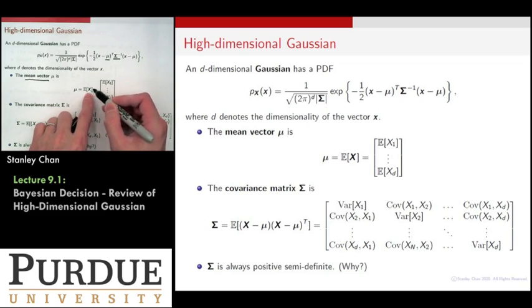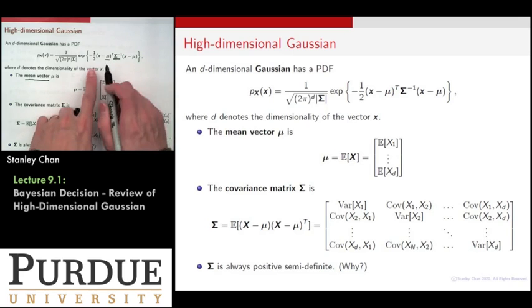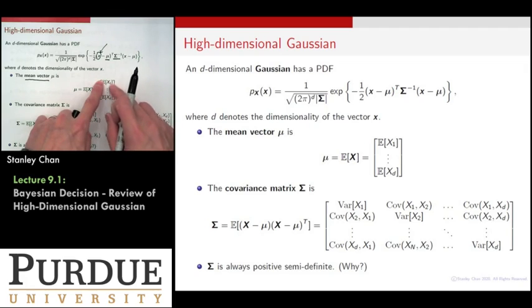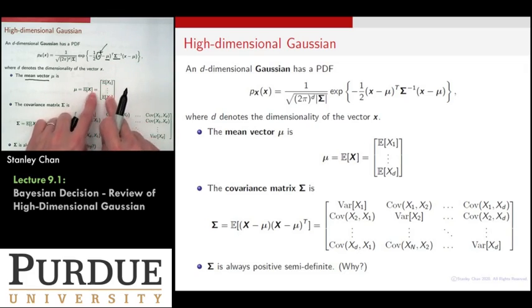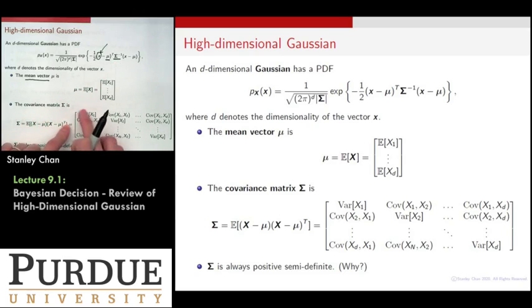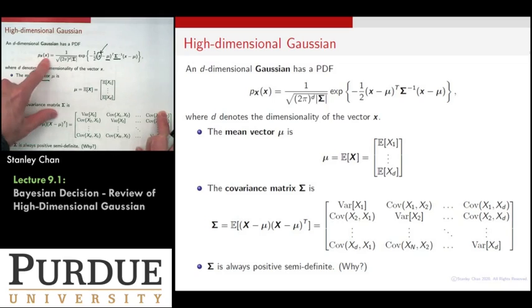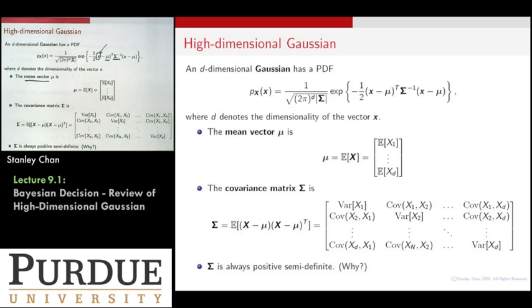X is a d-dimensional random variable — an array of d random variables — and taking the expectation of individual elements gives you the mean vector. The matrix sigma is called the covariance matrix. It has variance along the diagonal and covariance entries along the off-diagonals. The dimensionality of sigma is d by d, where d is the number of elements in your vector X. This sigma matrix is always positive semi-definite because it is constructed as an outer product of vectors. You can check this by verifying that all eigenvalues are positive.